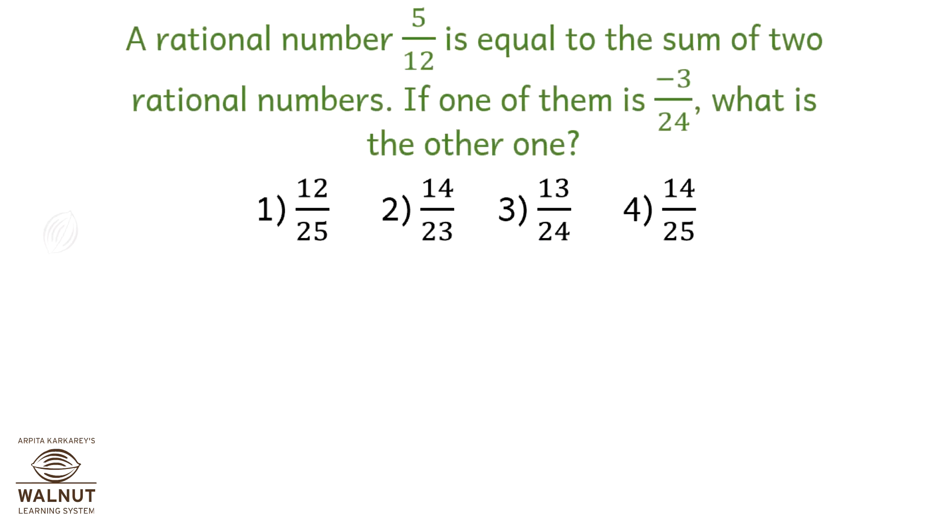A rational number 5 upon 12 is equal to the sum of two rational numbers. If one of them is minus 3 upon 24, what is the other one?